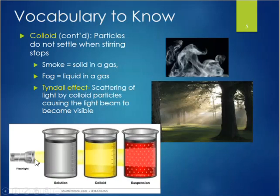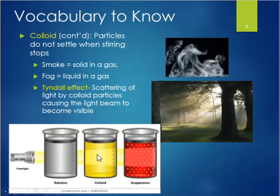When a flashlight beam is aimed through a beaker containing a solution, it shines straight through — the particles are too small to cause any scattering of light, so no beam is visible within the container. But when aimed through the colloid beaker, a beam of light is visible because the particles are large enough to scatter the light. The same scattering occurs in a suspension before the particles settle to the bottom.